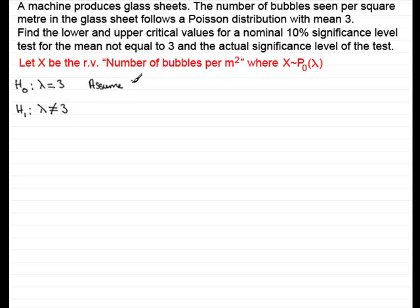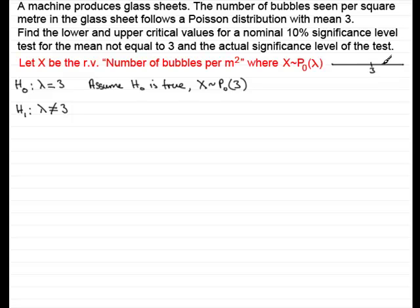Assuming H0 is true, the number of bubbles is distributed as a Poisson distribution with mean 3. If we draw a number line, the number of bubbles we expect is generally 3, but it can vary — we might get 2 or 4 bubbles. There will be a scattering of values, and at a certain point down here we have the lower critical value, which I'll call X_L, and an upper critical value, which I'll call X_U.